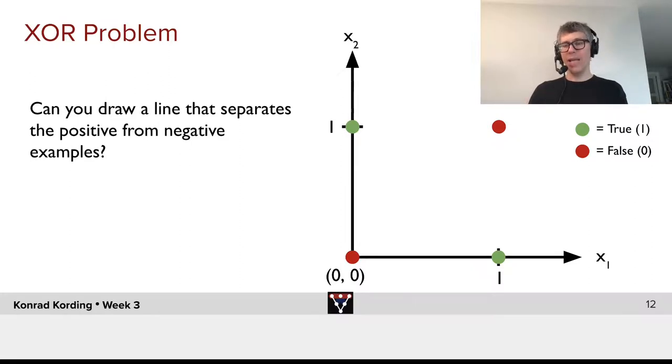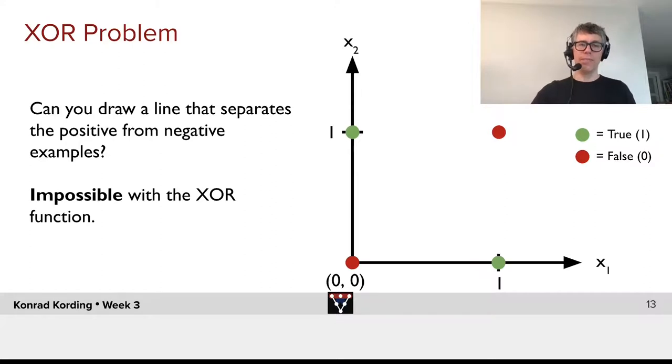In a way, the ones are in between the zeros. So it's impossible to solve the XOR problem with linear learning.